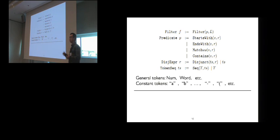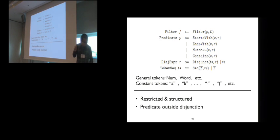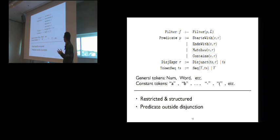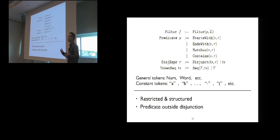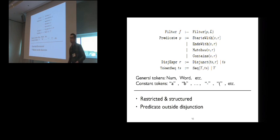The disjunctive expression R is a disjunction of token sequences, where each token sequence is a sequence of tokens chosen from a predefined token set. Our system has a token set with more than 100 tokens, including both general tokens and constant tokens. Essentially, our language is a restricted, structured form of regular expression language. The structure only allows predicates to be outside the disjunction, limiting the language to disjunctions of predicates of the same kind — which makes for a more efficient learning algorithm without hurting expressiveness in practice.